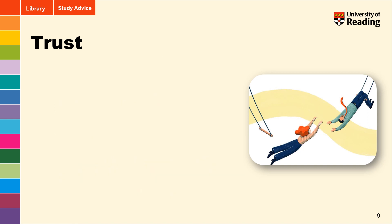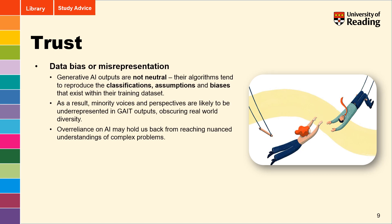In addition to issues of sourcing, we also need to consider data bias and misrepresentation. Whilst the idea of artificial intelligence gives the impression of neutrality, we cannot consider the output of generative AI tools as purely neutral. Their algorithms tend to reproduce the classifications, assumptions, and biases that exist within their training data set. As a result, minority voices and perspectives are very likely to be underrepresented in GAT outputs, obscuring real-world diversity. Over-reliance on generative AI tools may hold us back from reaching nuanced understandings of complex problems.